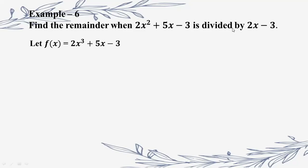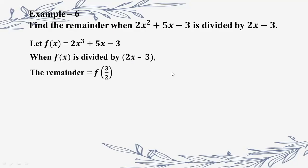We set up the divisor 2x minus 3. Using the remainder theorem, f of x is divided by 2x minus 3. So using the formula, a x minus b on the notation, a x minus b on the notation a x minus b, the remainder is f of b by a — that is f of 3 by 2.